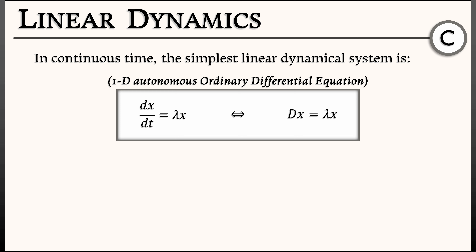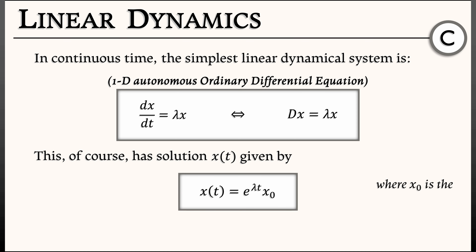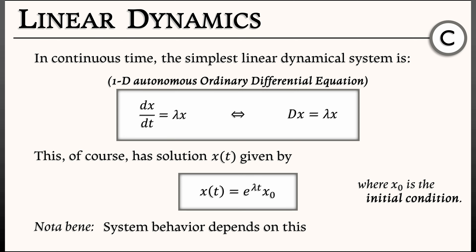This has a solution x of t given by an exponential function: x(t) equals e to the lambda t times x-naught, where x-naught is the initial condition. The behavior of this solution really depends on that constant lambda.